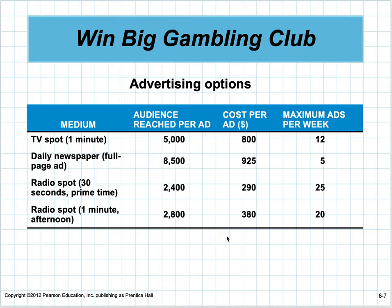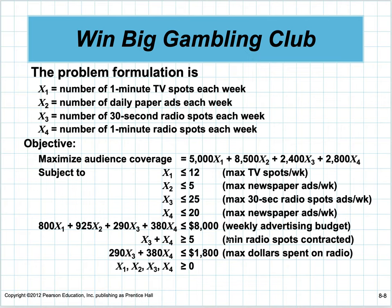A one-minute TV spot reaches 5,000 people, costs $800, and the maximum is 12 ads per week. A daily newspaper full-page ad reaches 8,500 people, costs $925, with a maximum of five. There are two types of radio spots: 30-second and one-minute. The 30-second ones are prime time, reaching 2,400 and 2,800 people respectively, costing $290 and $380, with maximums of 25 and 20 per week.